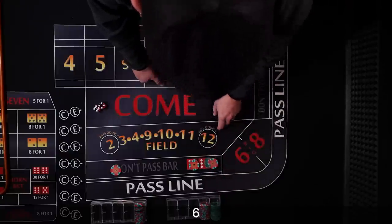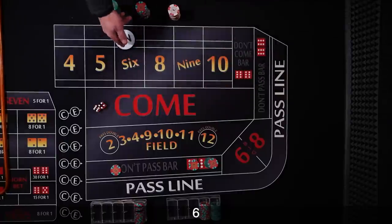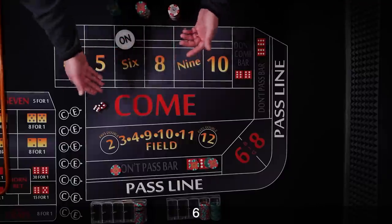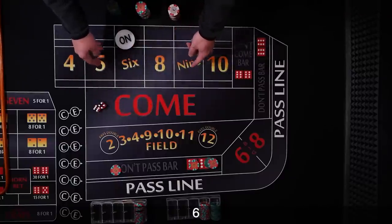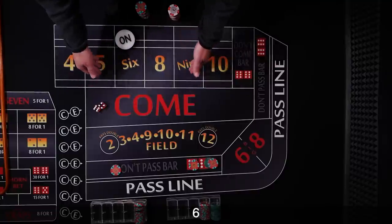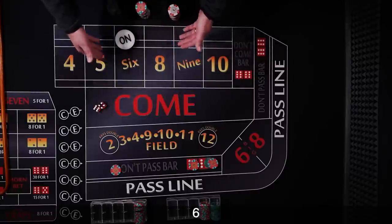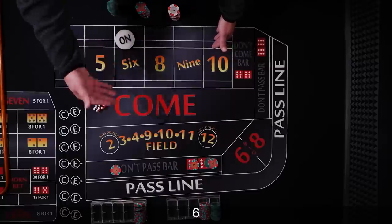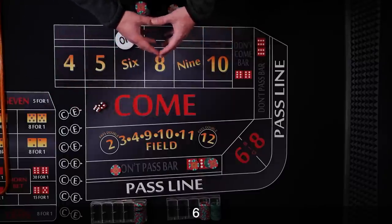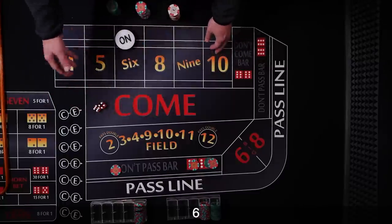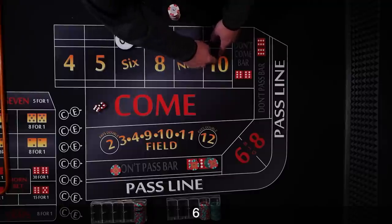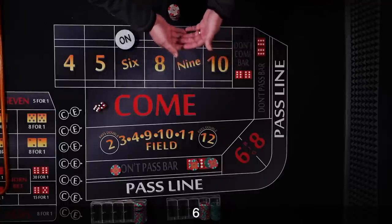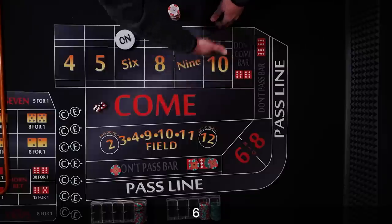So $60 in odds laid against the number. Now why that works is $60 is going to win back $50 on the 6 and the 8 because the odds are 5 to 6. The 5 and 9 $60 is going to win back $40 because the odds are 3 to 2. And the 4 and 10 $60 is going to win back $30 or 1 to 2. So it's based off the 3 times, it's based off the winnings. So you can win 3 times your flat bet of $10. So you can win $30 which allows you on the don't to bet $60 or 1 to 2.